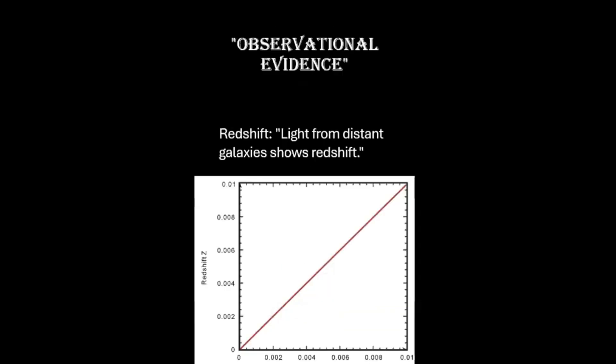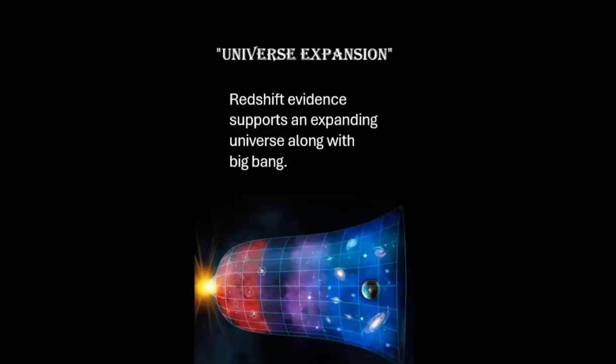Look at the graph — the evidence of red shift is very clear. As the distance of the star increases, more is the red shift. Thus, the expanding universe can be proved using the concept of red shift and also the study of the Big Bang, which was the initial evidence.